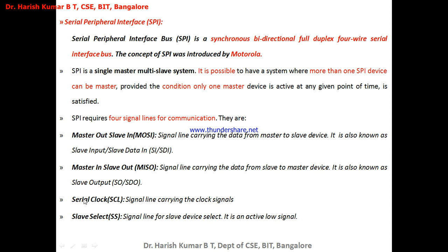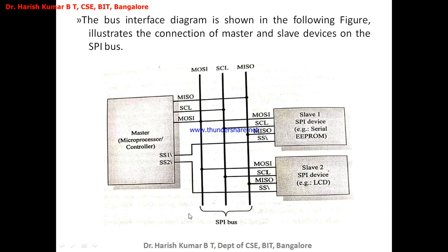The Serial Clock line carries clock signals to synchronize sender and receiver, same as in I2C. The Slave Select (SS) line selects the desired slave device in the multi-slave system. SS is an active-low signal — when the line is pulled low (logic 0), the corresponding slave becomes active. The SPI diagram shows four lines: MOSI, SCLK, MISO, and the Slave Select line connecting master to slaves.